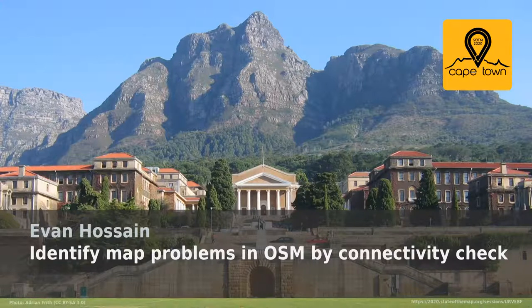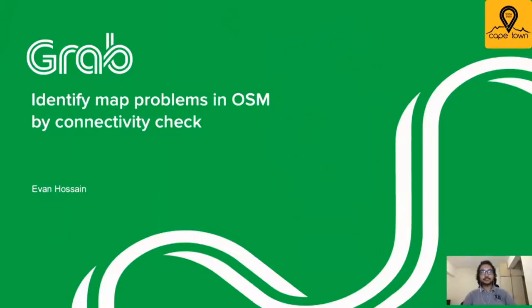Welcome back everybody to this session. I'm going to introduce the talk, which is done by Evan Ossein, a senior software engineer at Grab. If you have questions during the talk, don't wait until the end — post them during the talk on the program web page. Evan's talk will be focused on the use of algorithms to identify map problems and issues related to routing.